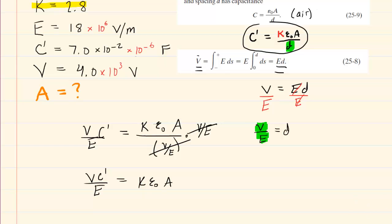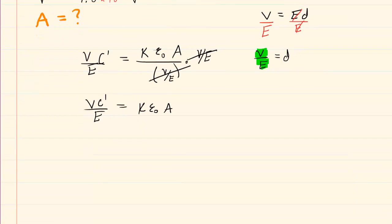And then we can solve for area by multiplying both sides of this equation by 1 over kappa epsilon naught. Basically, you're dividing both sides by kappa epsilon naught. They'll cancel out on the right-hand side. When you multiply on the left side, multiply your numerator, multiply your denominator, so we can see that the area will be given by V C prime over kappa epsilon naught times the electric field.